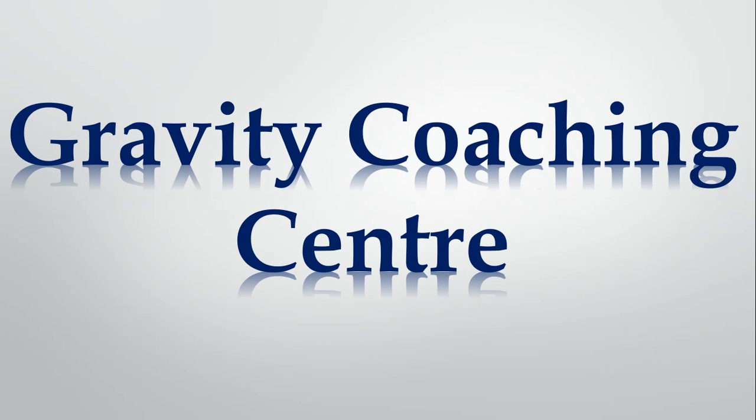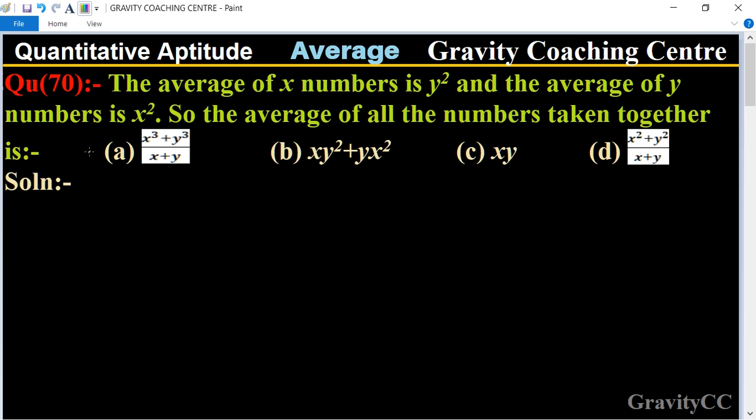Welcome to our channel, Gravity Coaching Centre. Quantitative Aptitude, chapter Average, Question number 70. The average of x numbers is y², and the average of y numbers is x².